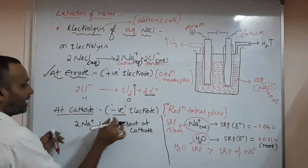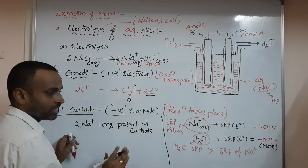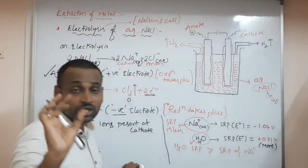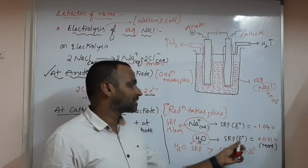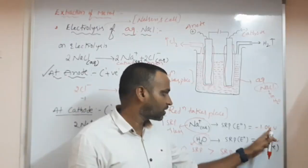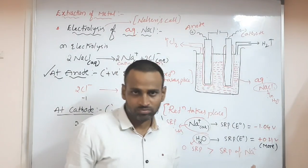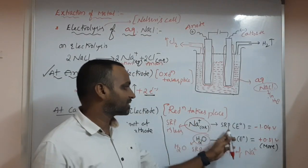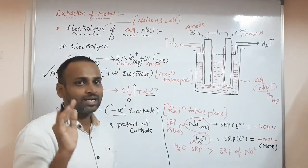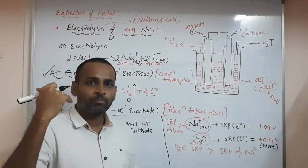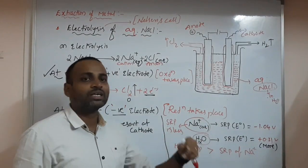At cathode — the negative electrode — Na⁺ ions are present but they won't undergo reduction. Water will undergo reduction. The reason is that water's SRP value is more. More SRP means more reduction ability — that will undergo reduction. Less SRP means that will undergo oxidation. Water undergoes reduction; Na⁺ does not.